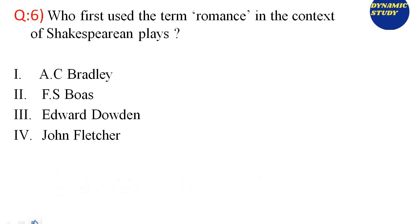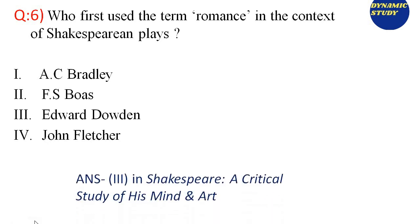Next question: Who first used the term 'romance' in the context of Shakespearean plays — who first collectively identified some Shakespearean plays as Shakespearean romance? The options are: A.C. Bradley, F.S. Bose, Edward Dowden, and John Fletcher. The answer is Edward Dowden. Edward Dowden wrote a book titled Shakespeare: A Critical Study of His Mind and Art, in which he used the term 'romance' to classify some of Shakespeare's plays.